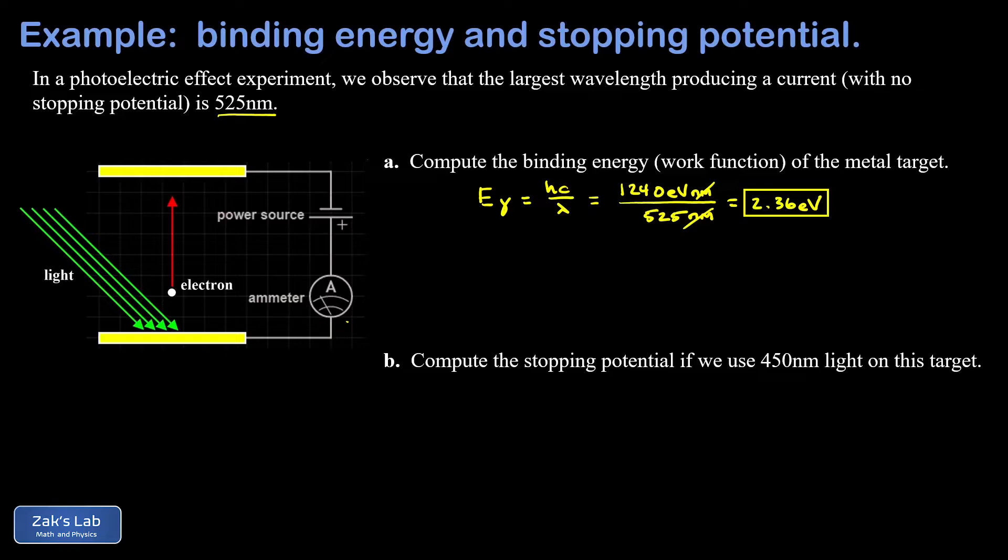So it takes a minimum of 2.36 electron volts just to bump electrons off that plate, and that's what we call the binding energy for the material. In part b we're asked to get the stopping potential if we use a higher energy light, 450 nanometers. So that has a smaller wavelength, higher frequency, higher energy.